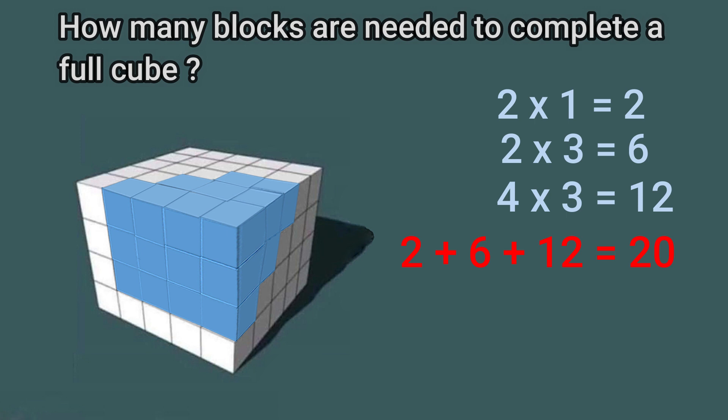But what we have made is not a cube. If you see carefully, it is a cuboid. See, the length of the larger solid is 5 small cubes, and the breadth is also 5 small cubes.